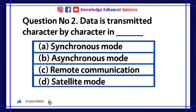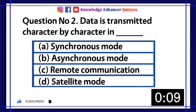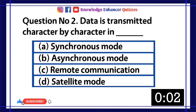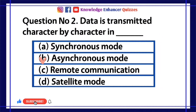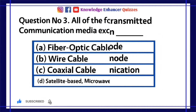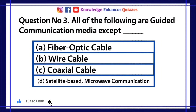Question number 2: Data is transmitted character by character in dash. A. Synchronous mode. B. Asynchronous mode. C. Remote communication. D. Satellite mode. Option B is the right answer.